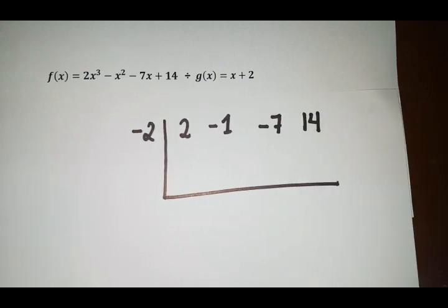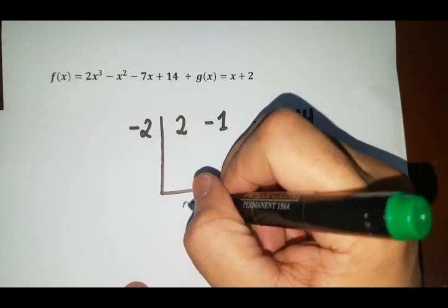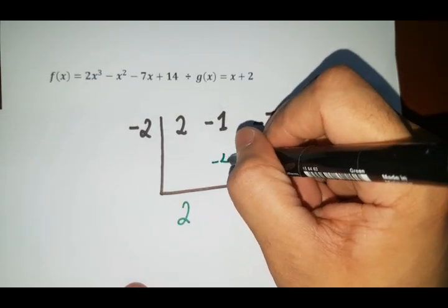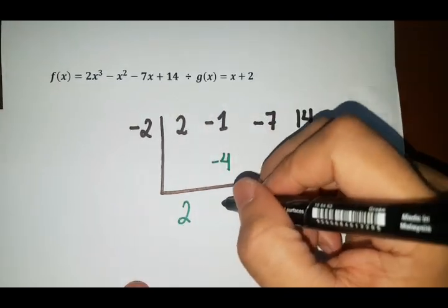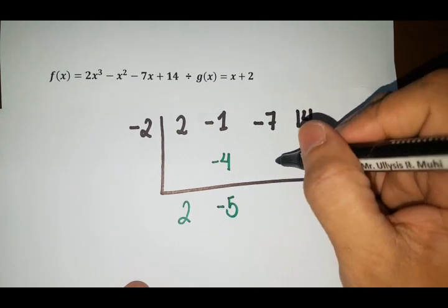So next step. So 2, bring down. So 2 times negative 2, that's negative 4. So add, that is negative 5. Negative 5 times negative 2, that's 10.